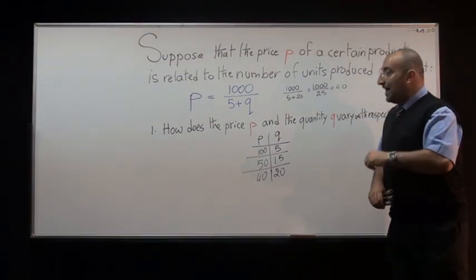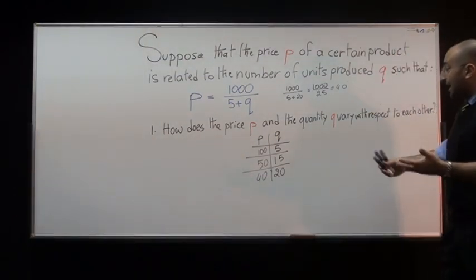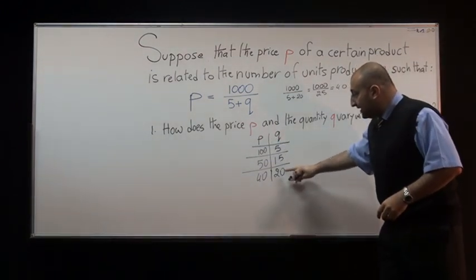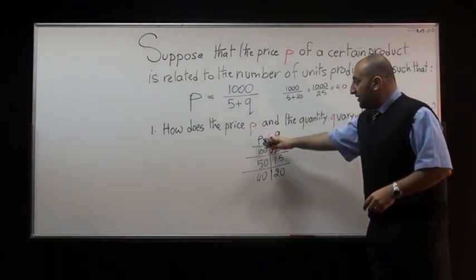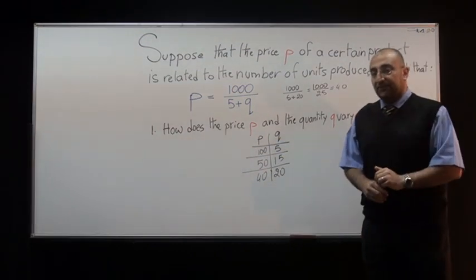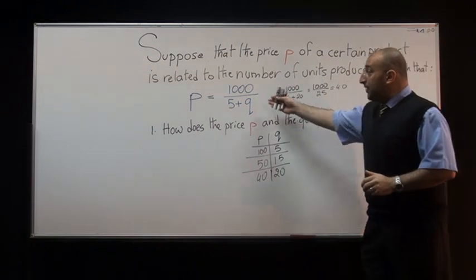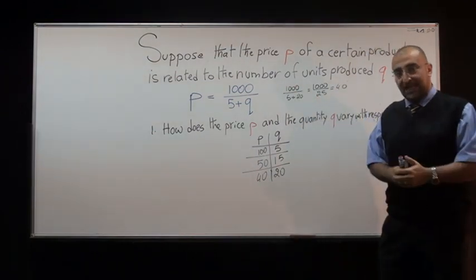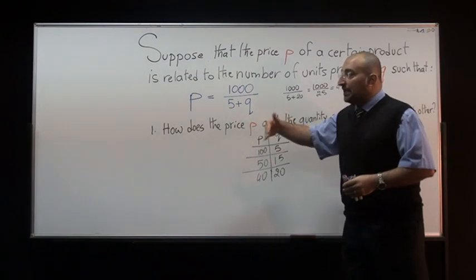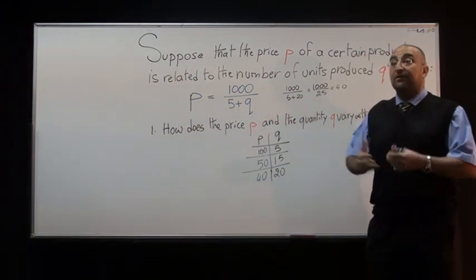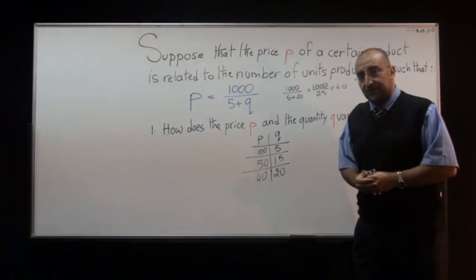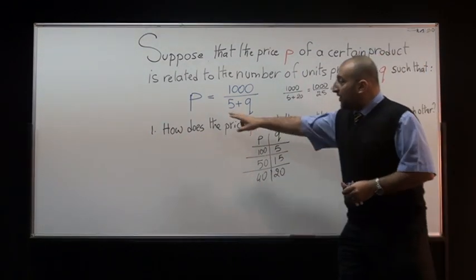That is absolutely correct. As the quantity Q increases, the price P decreases. As a side note, that makes perfect sense from a logical standpoint: when you produce a lot of a certain commodity — for example, soft drinks where millions of cans are produced — then the price of this commodity becomes really small and cheap.